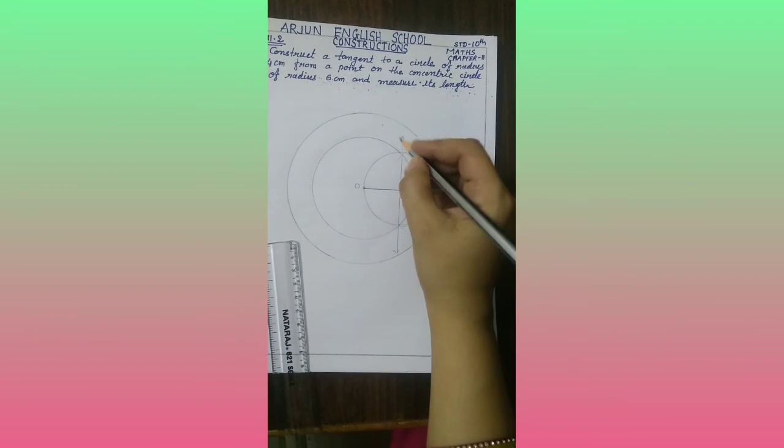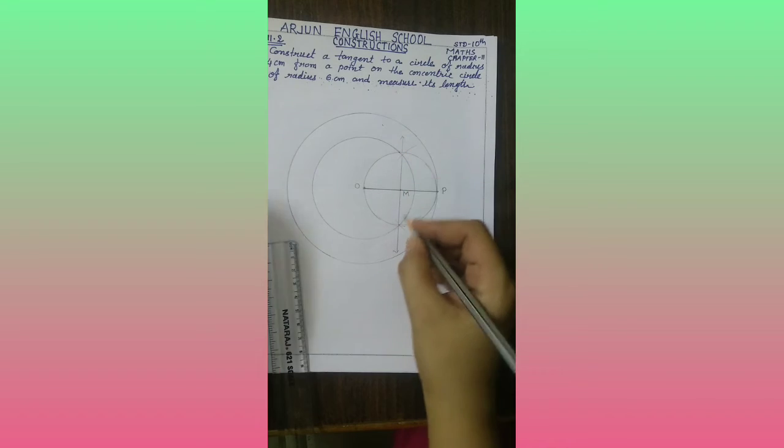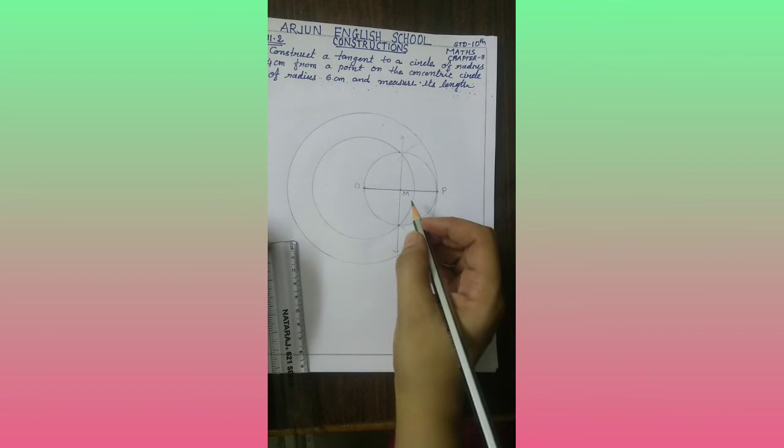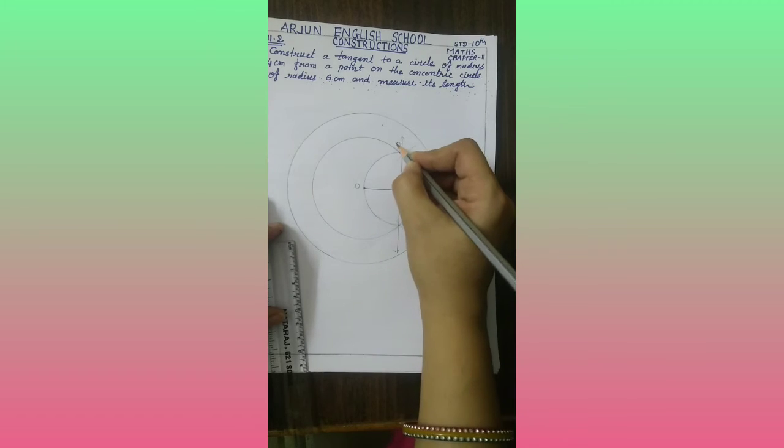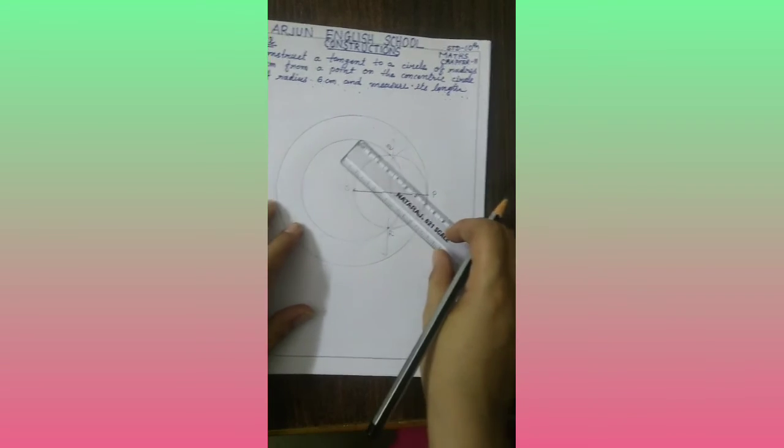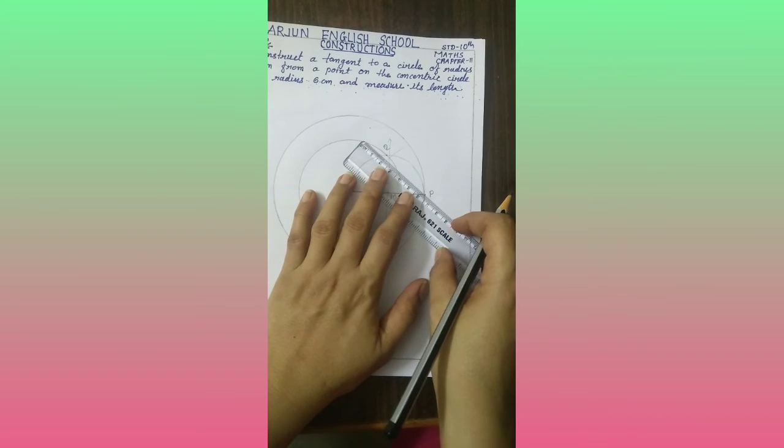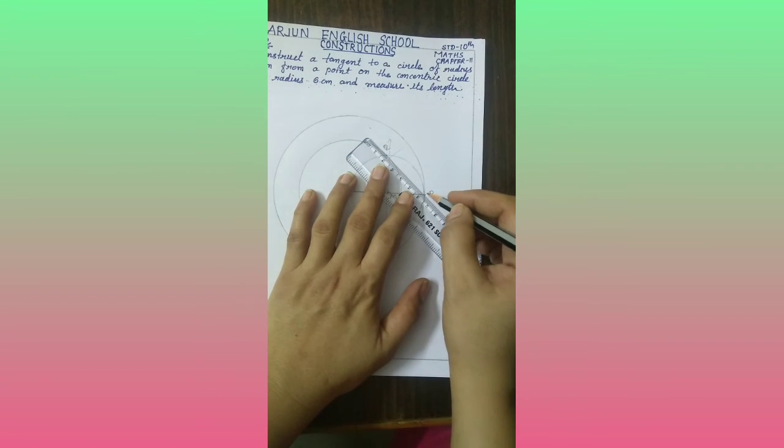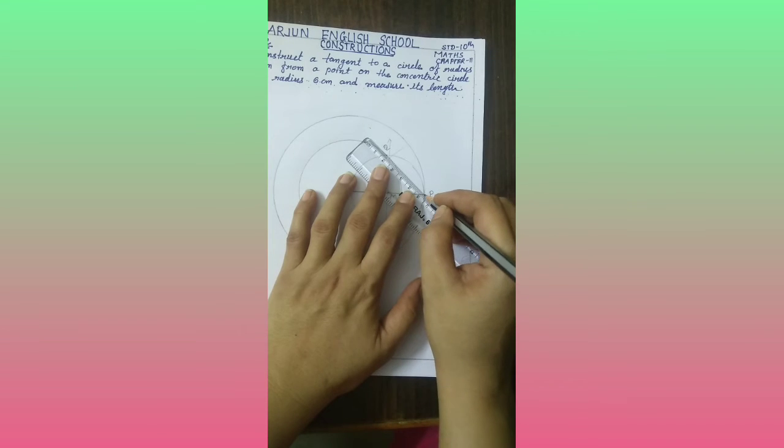Now you are getting two intersecting points on this circle of 4 cm, Q and R. It is not necessary to take P, Q and R names. If you want to take A, B, C then also it is okay.